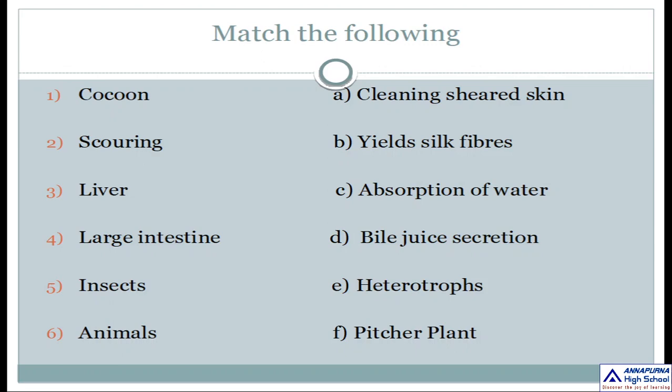Section 2: Match the following. Match column A with column B. In column A you can see: cocoon, scouring, liver, large intestine, insects, animals. In column B you can see: cleaning sheared skin, yields silk fibers, absorption of water, bile juice secretion, heterotrophs, pitcher plant.